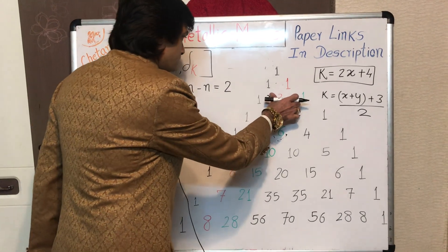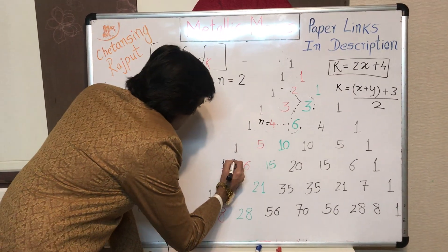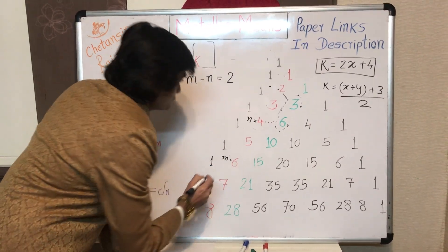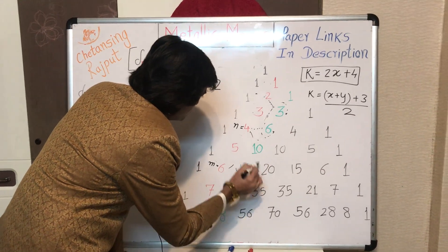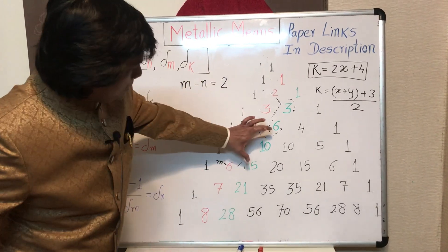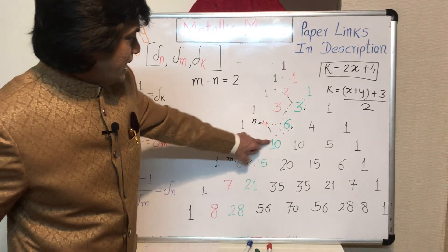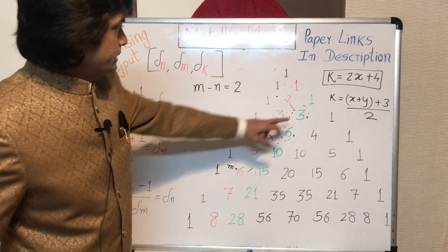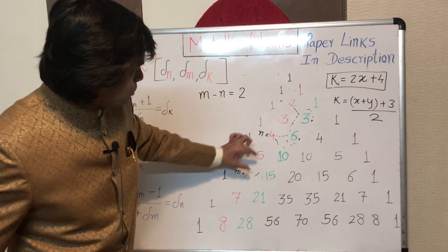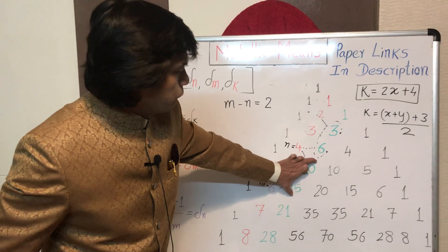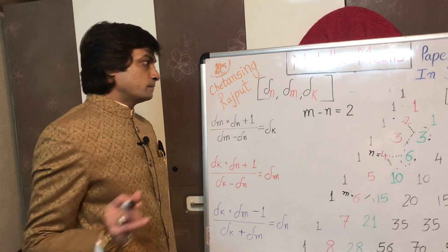Take another example. This time N equals 4 and M equals 6, so M minus N equals 2. We consider the two integers on the triangular number diagonal between 4 and 6 — that is 10 and 15 — as X and Y. Putting them in the formula gives K equals 14. So the fourth metallic ratio, sixth metallic ratio, and 14th metallic ratio form a triad fitting this formula.